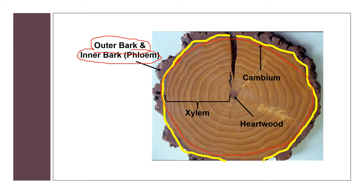Next after the cambium layer is your xylem cell, which is the sapwood. This is the tree's pipeline for water moving up to the leaves. When water is absorbed from the roots, it moves through your xylem cells. You can see the span of the xylem cells from the cambium layer up to the innermost part in the heartwood. As newer rings of sapwood are laid down, the inner cells lose their vitality and then they turn to heartwood.